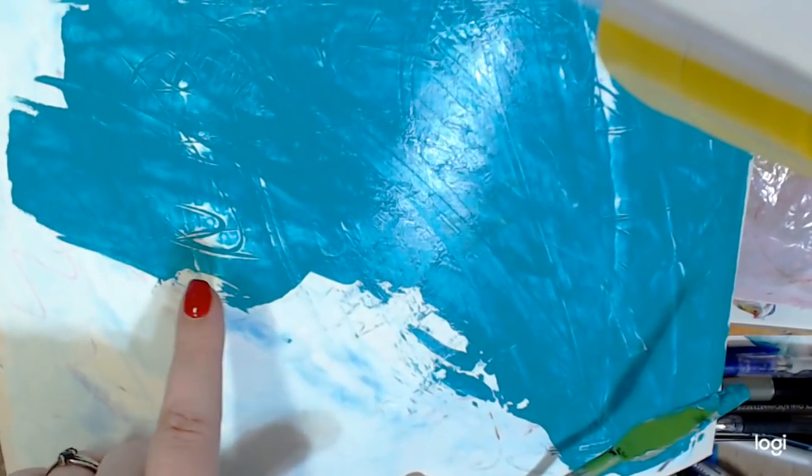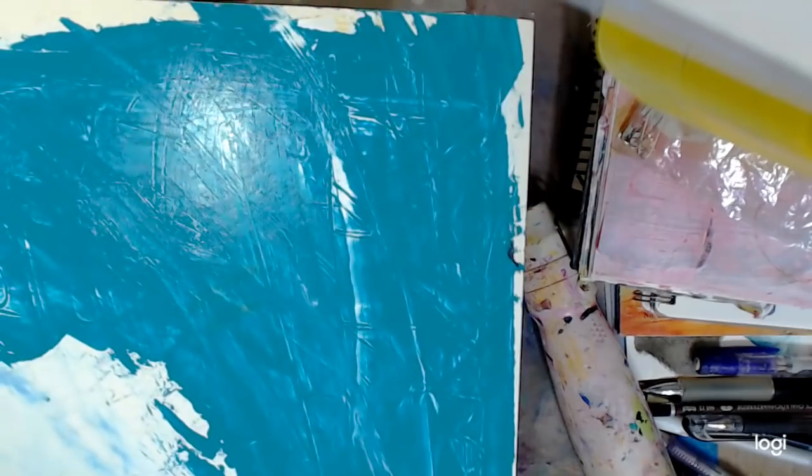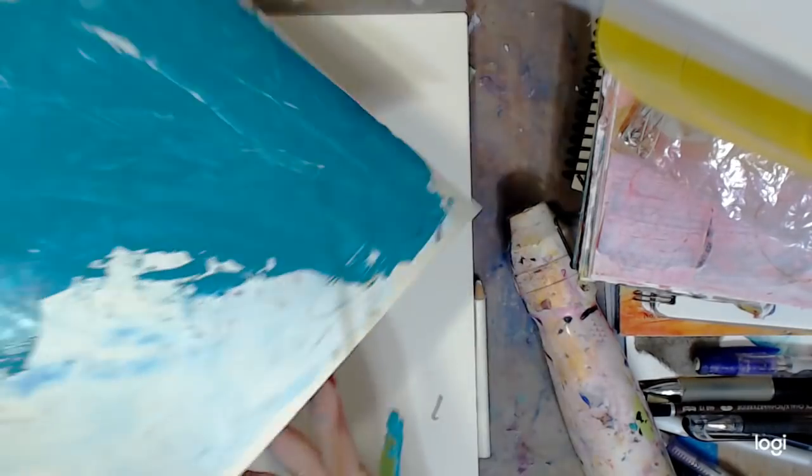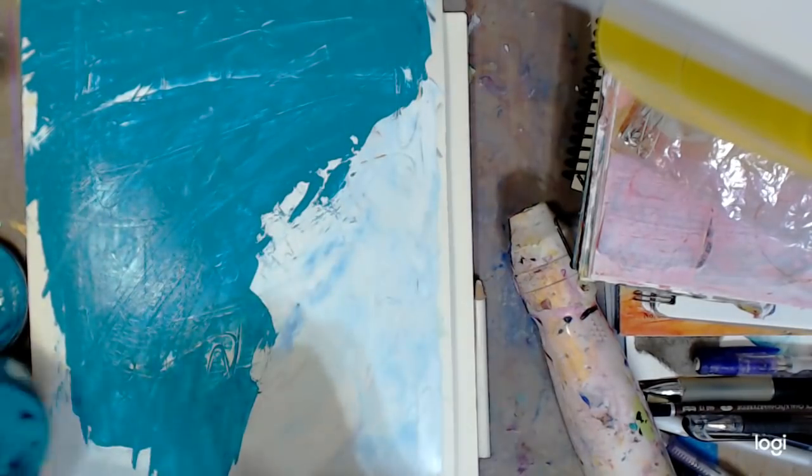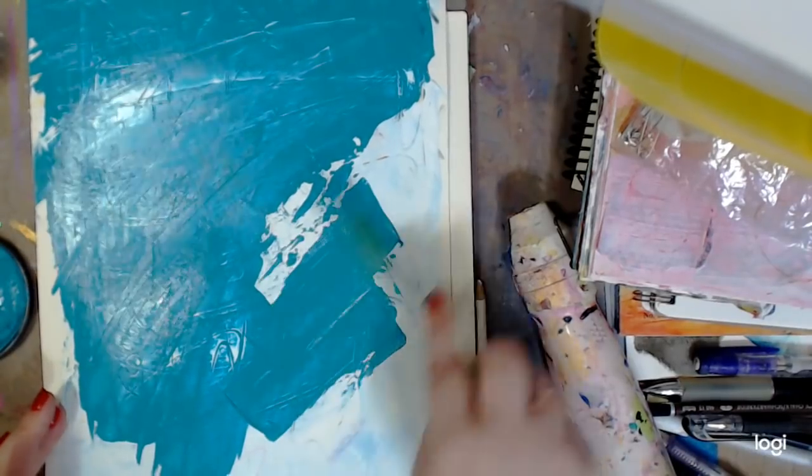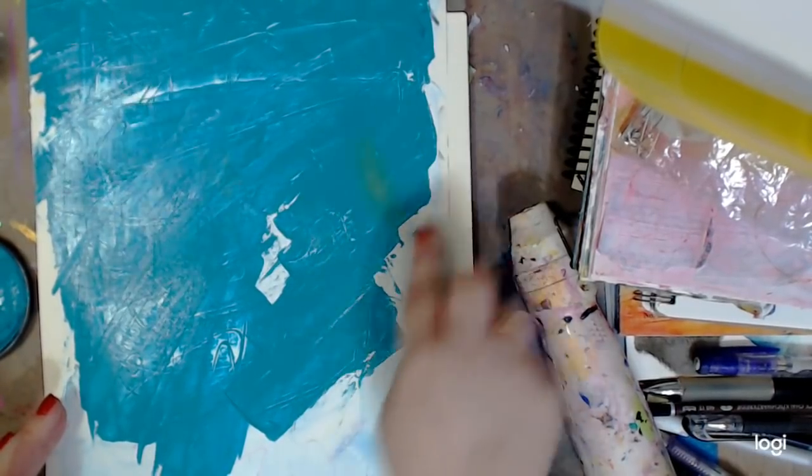So you can see I'm kind of scraping it a bit. You see this is all texture, you can see it right there when I kind of move it. Look at all that delicious texture underneath there, and that starts your mixed media background, doesn't it?